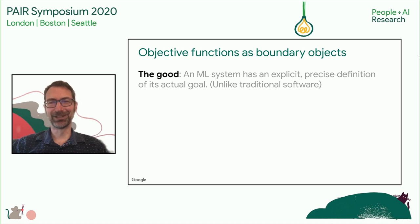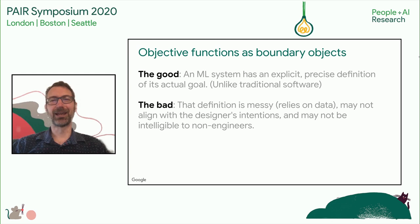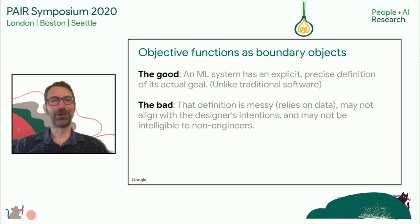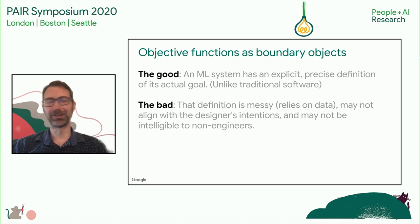However, there's also the bad. As explicit as this definition is, it can be pretty messy in practice because often the definition of the function relies on a training data set — so understanding the function means understanding a big data set. Another problem is that the math of what's written down may not align with what a human designer actually wanted; it's always an approximation, a kind of proxy. And worse yet, because of the form in which it's written down — typically in code or mathematical notation — it's not always intelligible to non-engineers.